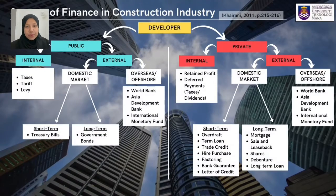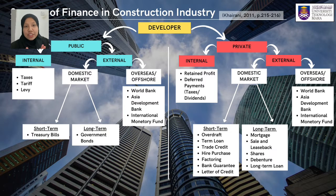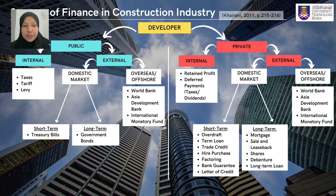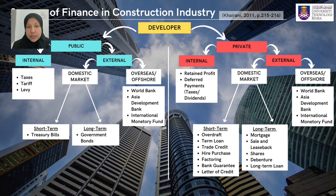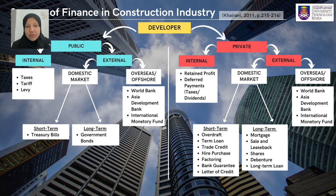I would like to explain about the sources of finance in the construction industry. These sources are best discussed according to the type of developer — public or private. Public developers such as the federal government, state government and statutory bodies can choose from internal sources such as taxes, tariffs and levies, or external sources. External sources are divided into domestic market, with treasury bills for short-term finance and government bonds for long-term finance, and overseas market, where developers can apply for loans from the World Bank, the Asian Development Bank, or the IMF.